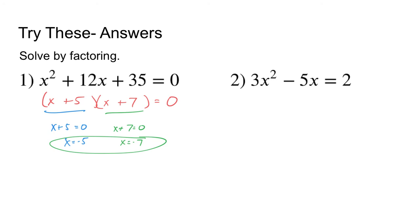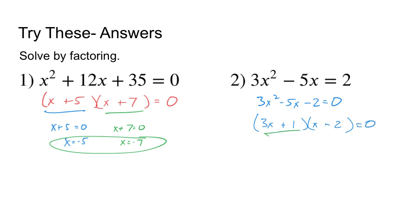Number 2: 3x squared minus 5x minus 2 equals 0. Go into factoring mode using your favorite factoring method. It factors to x minus 2 times 3x plus 1. Set each factor equal to 0 independently. We get x equals 2 and x equals negative 1 over 3.